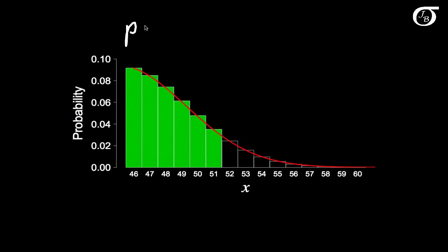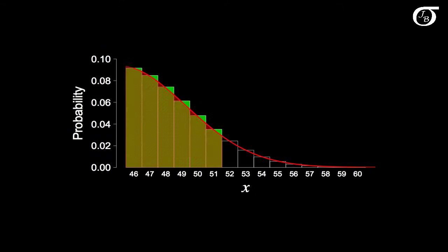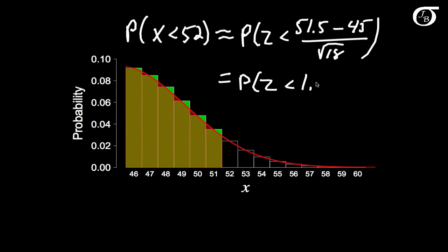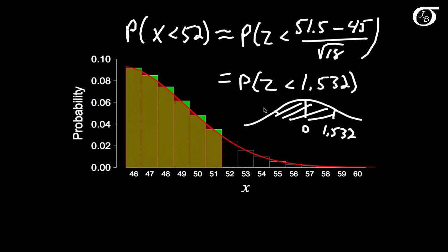For P(x < 52) — strictly less than 52 — I don't want to include any of 52 while going left, so I should start at 51.5. Applying the continuity correction: P(z < (51.5 − 45) / √18) = P(z < 1.532) ≈ 0.9372.